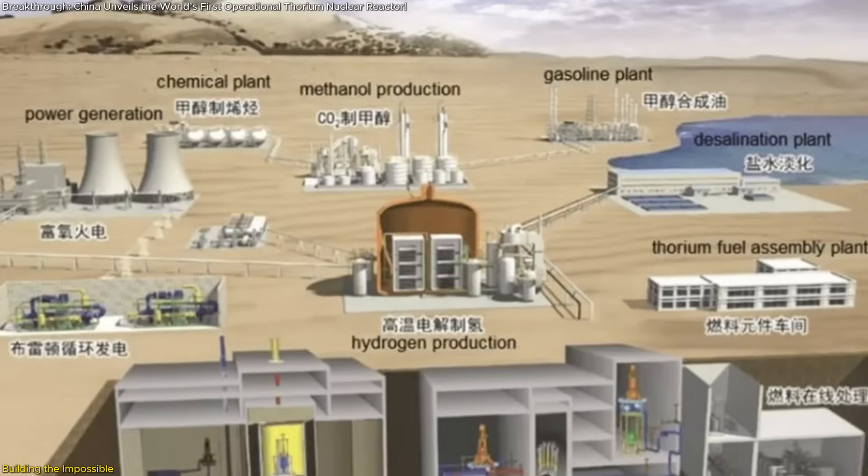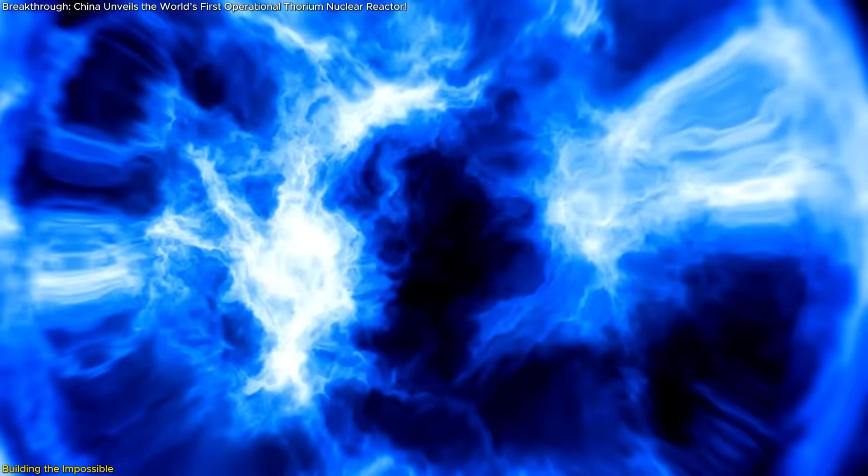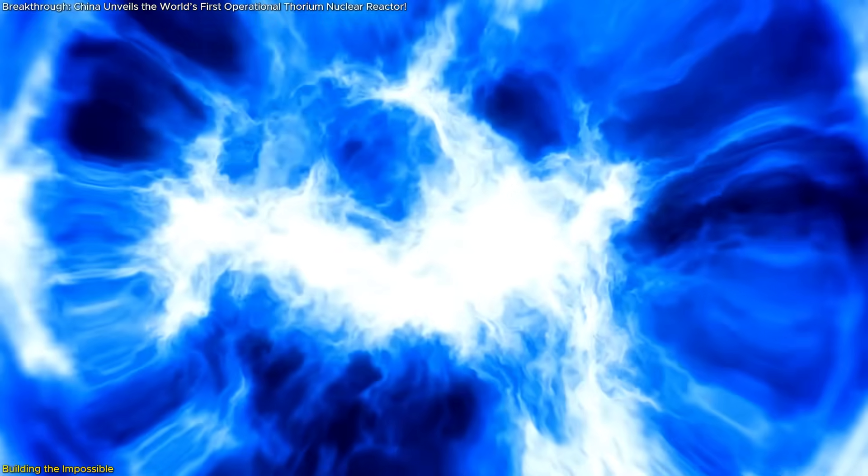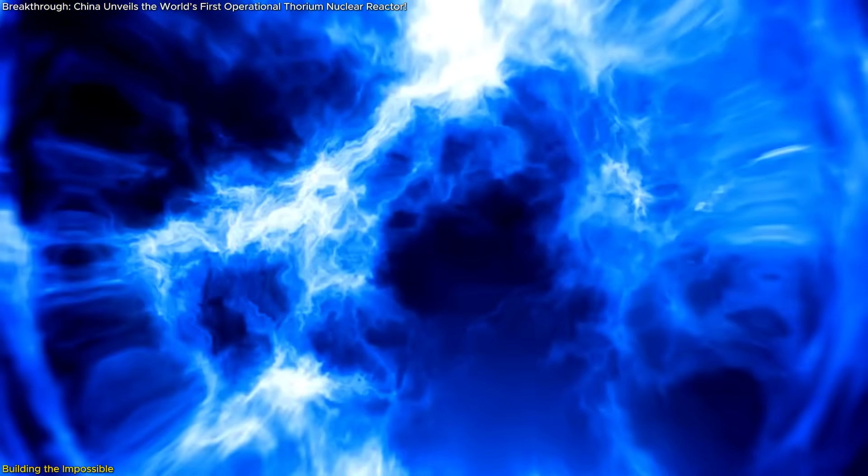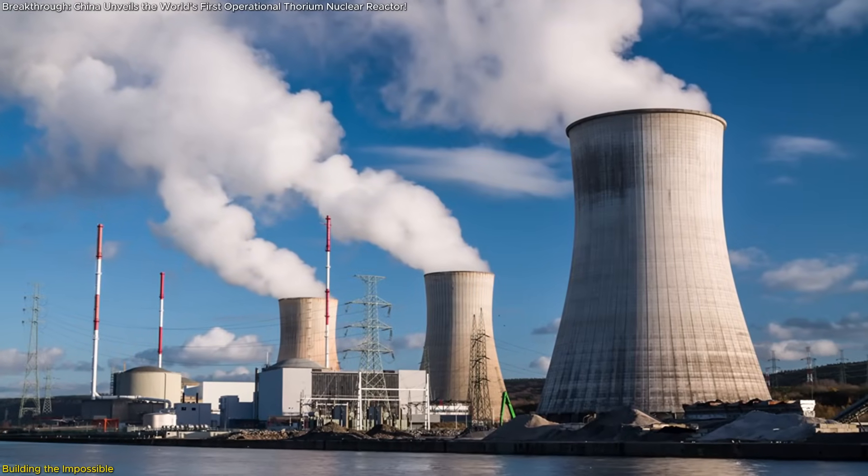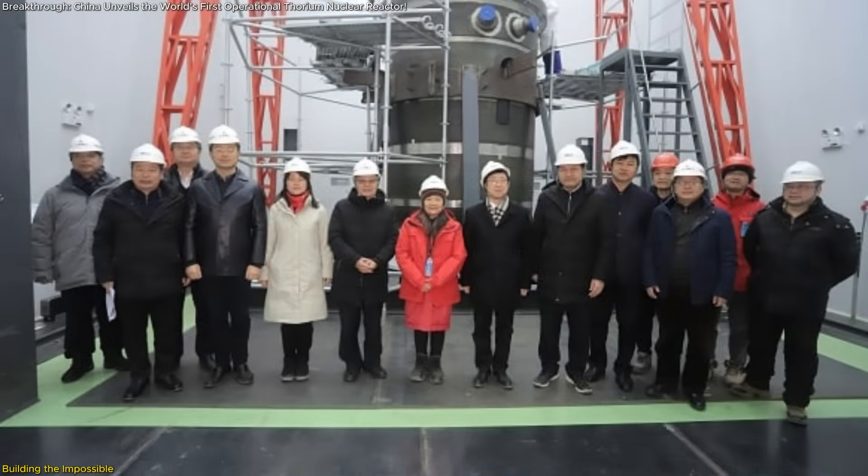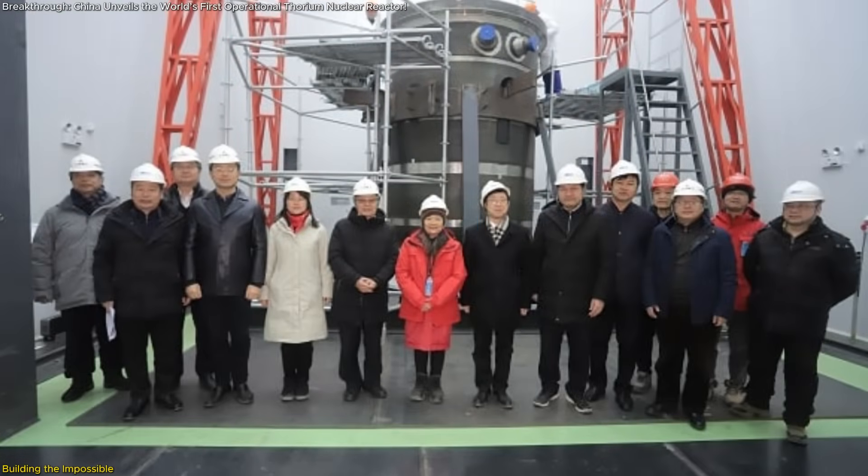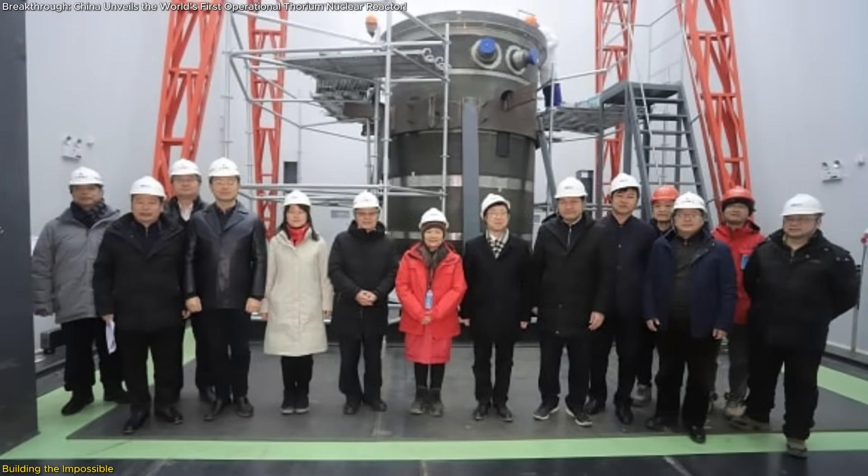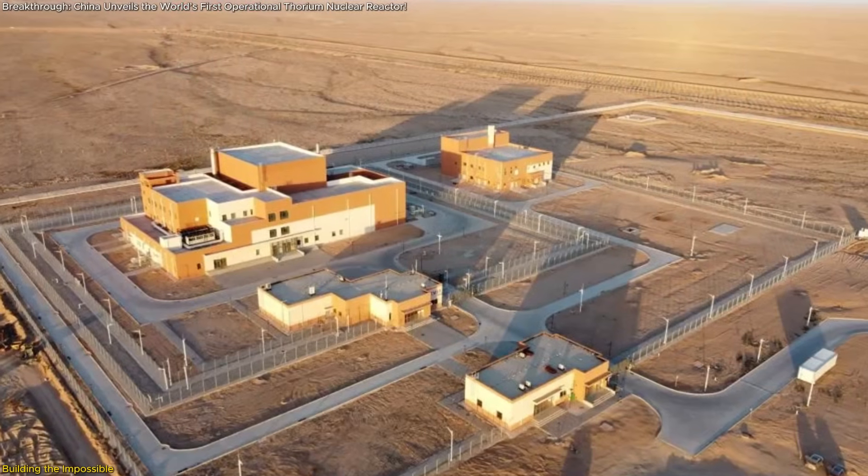Another major hurdle was building the first system capable of on-core thorium fuel reloading, a feature that eliminates downtime and raises operational efficiency dramatically. In traditional uranium-based reactors, fuel must be swapped out during shutdowns, which are expensive and time-consuming. In the TMSR-LF-1 reactor, the team designed a sealed fuel cycle that allows for continuous refueling while the reactor is running, something never before achieved at this scale.